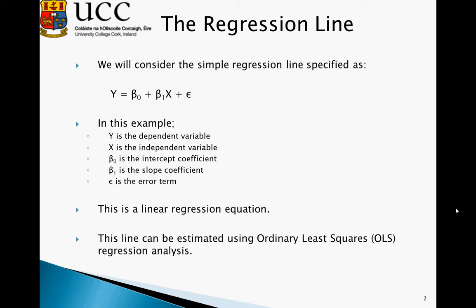In this example, Y is the dependent variable, X is the independent variable, beta naught is the intercept coefficient, and beta 1 is the slope coefficient. The epsilon term is the error term. This is the standard notation for the linear regression line.